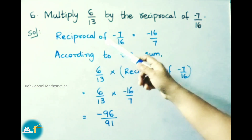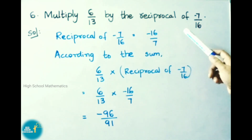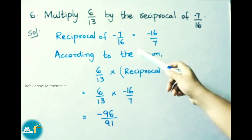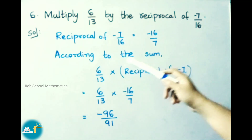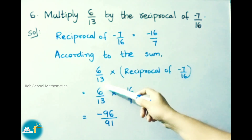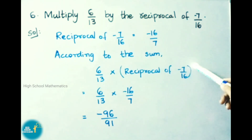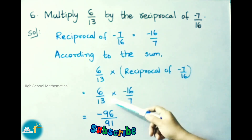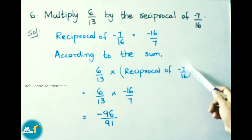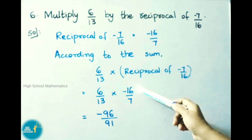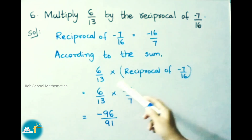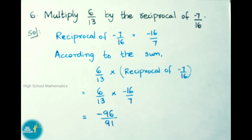See question number 6: Multiply 6/13 by the reciprocal of -7/16. The reciprocal of -7/16 is -16/7. So 6/13 × -16/7 = (6 × -16) / (13 × 7) = -96/91. The answer is -96/91.